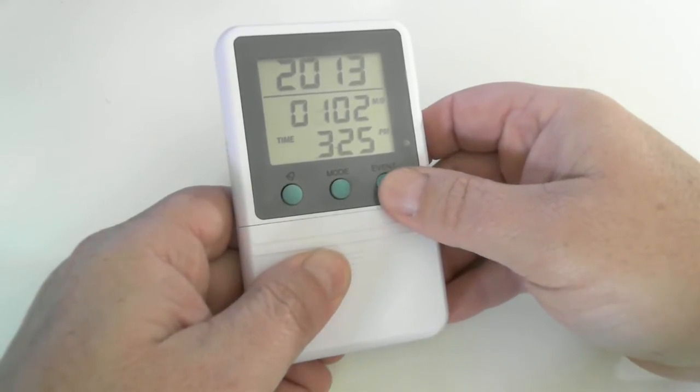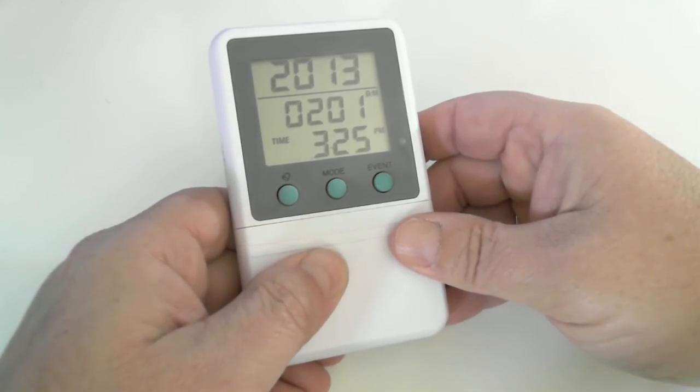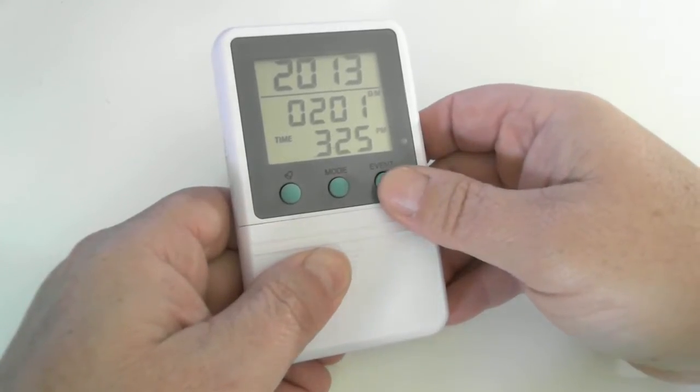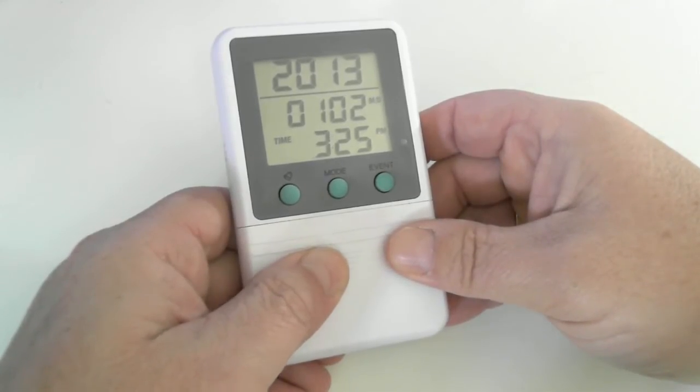Pressing the event here will toggle the month and day to day and month, and hitting event will toggle it back again. All right, let's go on to setting up the unit.